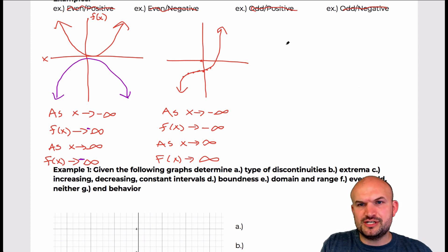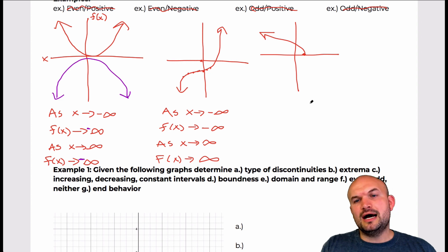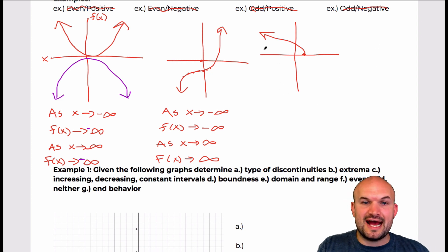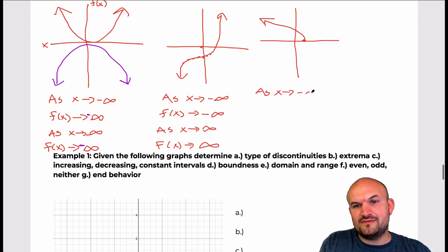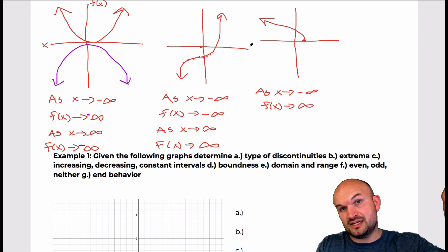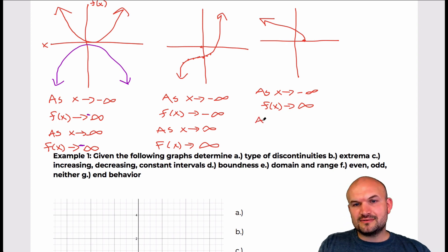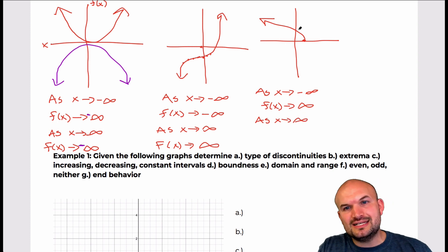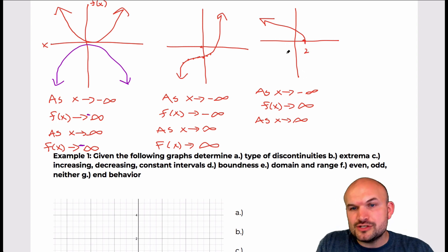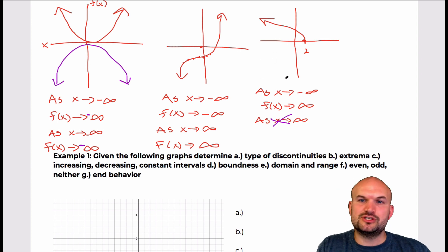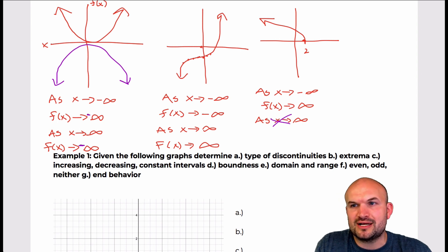Let's look at two more functions as far as end behavior. Let's look at a radical function — something like this. As x approaches negative infinity, you can see the graph is continuing, so f(x) is approaching positive infinity — as we're going to the left the graph continues going up. However, as x approaches positive infinity, you can see there is no end behavior. The graph stops — let's say it stops at 2. It's not continuing, so there is no end behavior as x goes to the right.